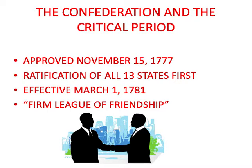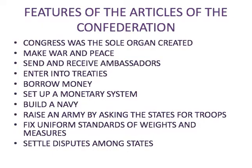It was called more of a League of Friendship. Some of the features: Congress was the sole organ — there was only one branch. They could make war and peace, send ambassadors to other countries, enter treaties, borrow money, set up their own system, build a navy, and raise an army by asking states for soldiers. They could also make standard weights and measures and settle disputes between states.